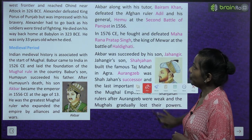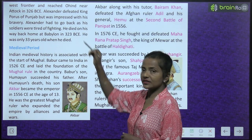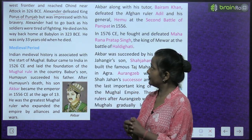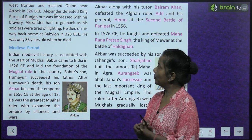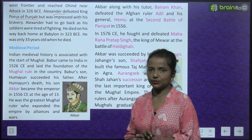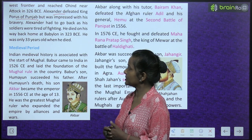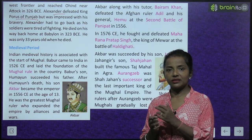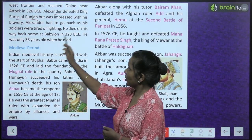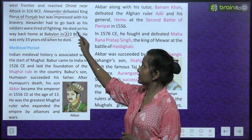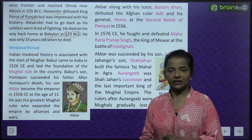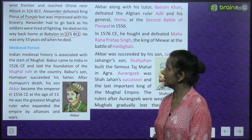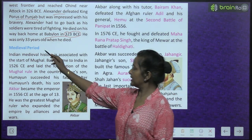Alexander defeated King Poros of Punjab but was impressed with his bravery. Alexander had to go back as his soldiers were tired of fighting. He died on his way back to Babylon in 323 BCE. He was only 33 years old when he died.